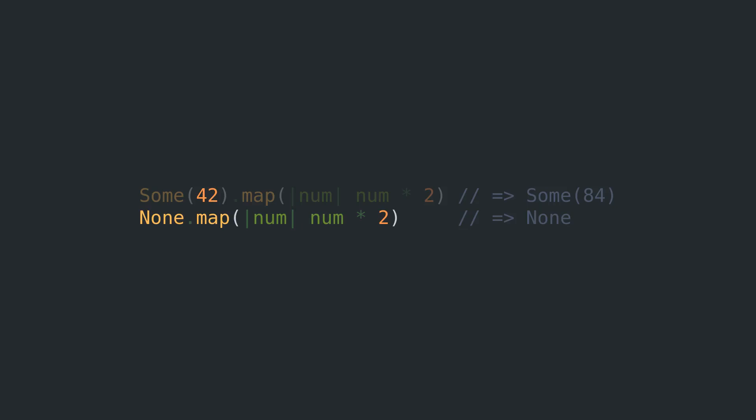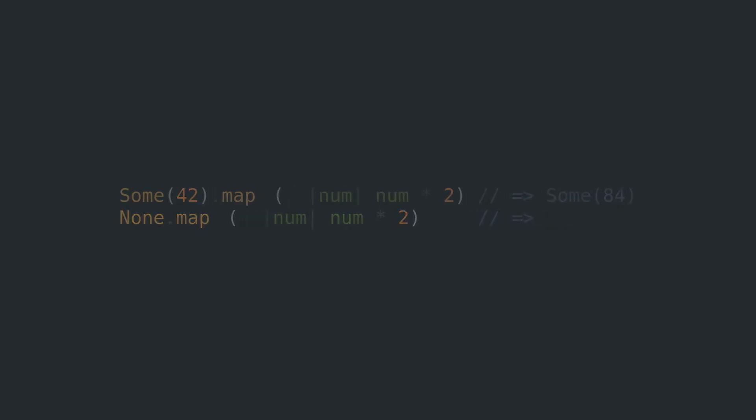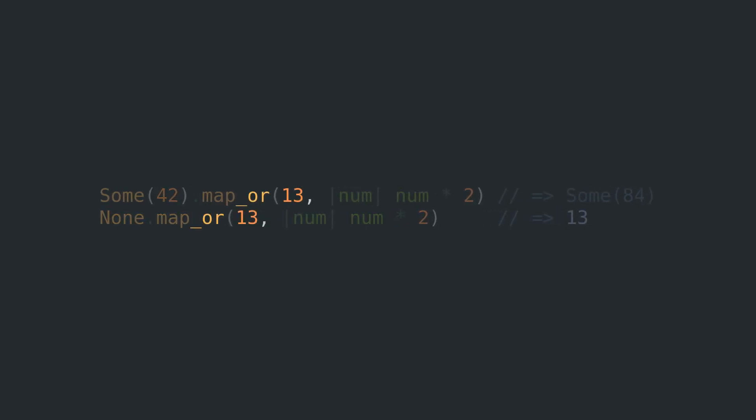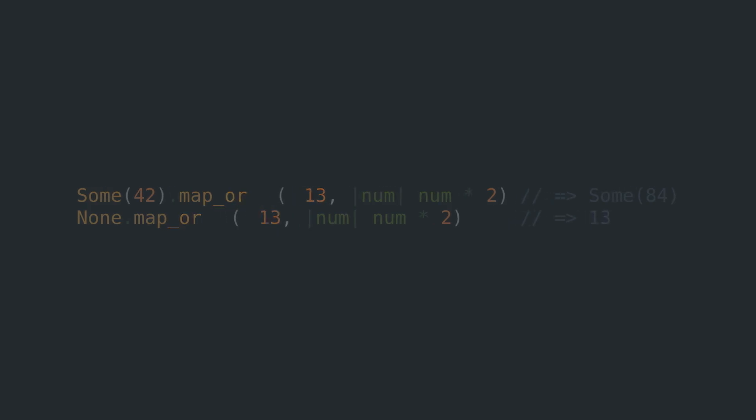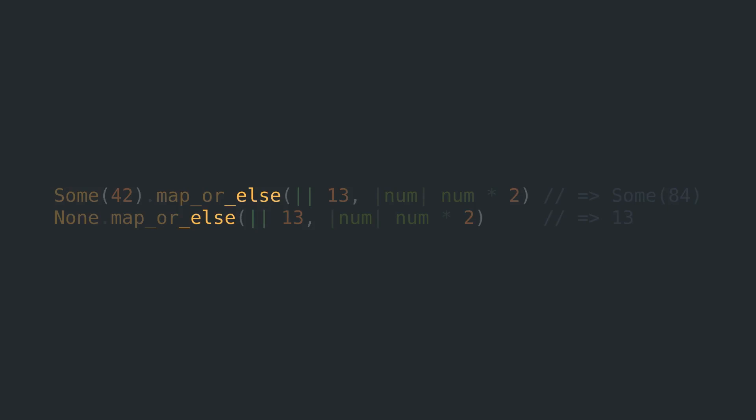As we saw with unwrap, you can append an OR to map as well if you want to provide a default value. But don't ask me why you have to provide the OR value first and the mapping function second — some of Rust's design decisions are just beyond me. Again, to drive up your closure count, feel free to add an else.